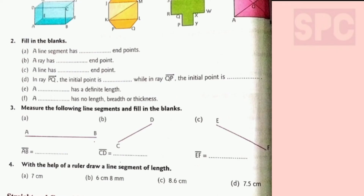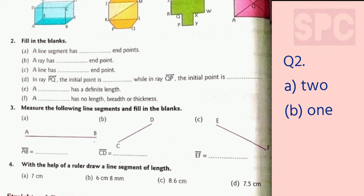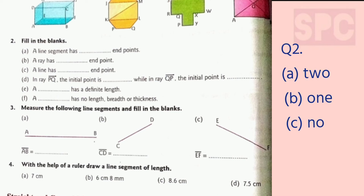Question number 2: fill in the blanks. Part A — a line segment has ___ end points. A line segment has 2 end points, so we write 2. Part B — a ray has ___ end point. A ray has only 1 end point, so we write 1. Part C — a line has ___ end point. A line has no end point — it keeps extending endlessly in both directions — so we write 'no'.